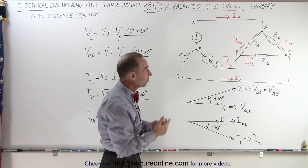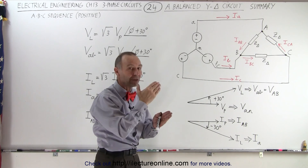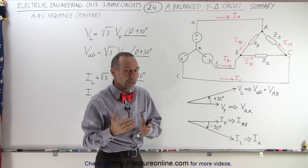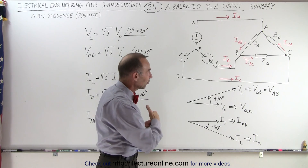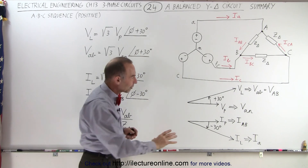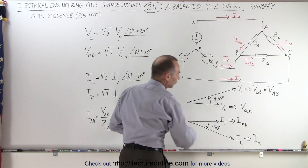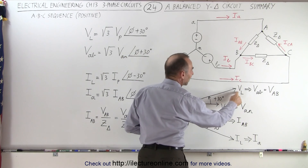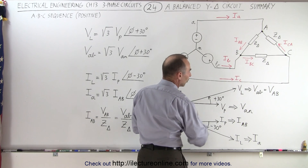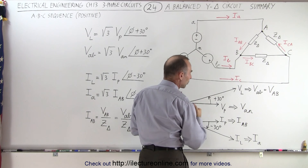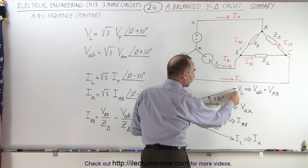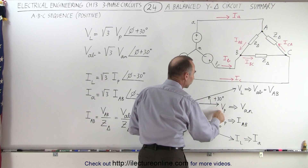We need to realize that there's a difference between the magnitude of the line currents and the phase currents, and between the line voltages and the phase voltages. There's also a difference in the phase angle between the line currents and the phase currents, and the line voltages and the phase voltages. Here we have a graphical representation of those differences. The line voltage is larger in magnitude than the phase voltage by a factor of the square root of 3, and the line voltage leads the phase voltage by 30 degrees.